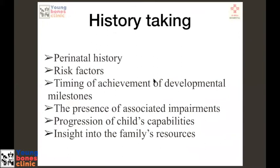If a child comes to you with their parents saying the kid has difficulty in walking, the most important history to take is any difficulty in the perinatal period — delayed or prolonged labor, any history of preterm birth, perinatal asphyxia, NICU admission, intubation, or delayed cry. These are important history findings that may indicate a hypoxic insult at the time of birth — the single most important piece of history.